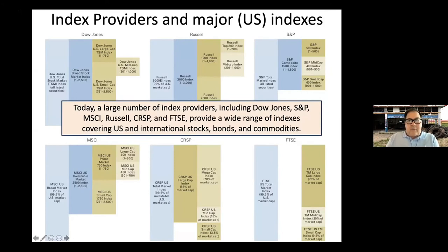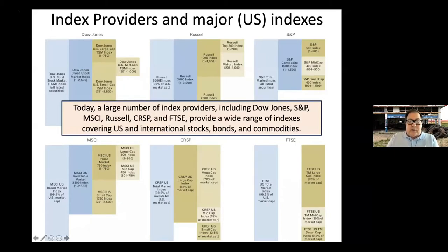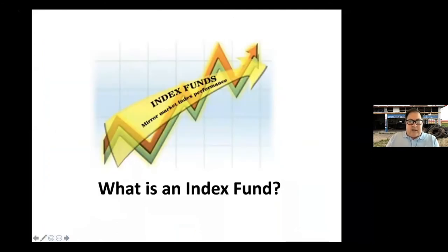Where do these indexes come from? They come from private companies. The New York Times and Wall Street Journal own some; others include Dow Jones, Russell, S&P, MSCI, CRSP, and FTSE — all separate companies supporting different indexes. Vanguard has increasingly shifted from Russell to CRSP indexes.